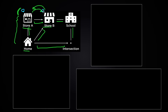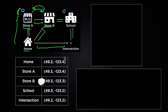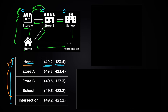Let's say you already have each place's coordinates — latitudes and longitudes — stored on your computer. From this table, you can tell that the latitude of home is 49.2 and the longitude of home is -123.4, and so on. You can tell where each location is exactly, but you can't tell how these locations are connected with streets.